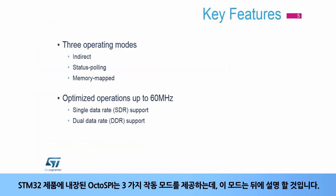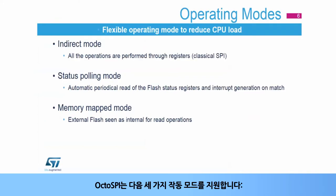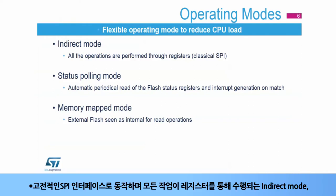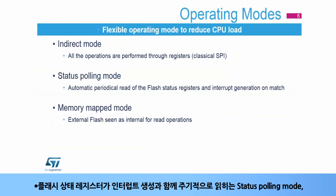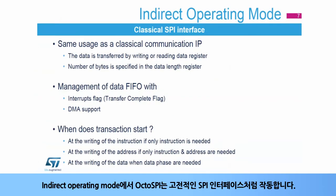The OctoSPI integrated inside STM32 products offers three operating modes, which will be explained later in this presentation. Communication with external memory supports single or dual data rate operation. The OctoSPI supports three different modes of operation: indirect mode, where it behaves as a classical SPI interface and all operations are performed through registers; status polling mode, where the flash status registers are read periodically with interrupt generation; or memory mapped mode, where external memory is seen as if it is internal memory for read operations.